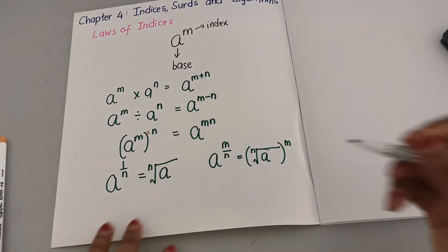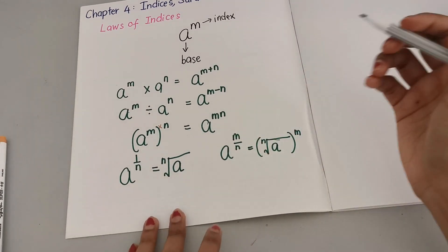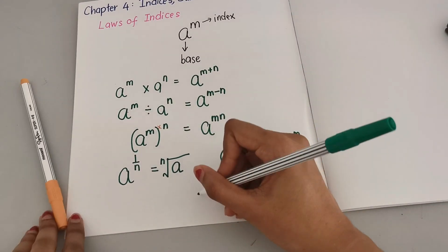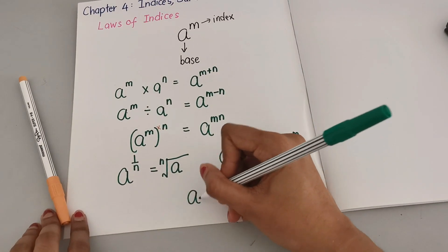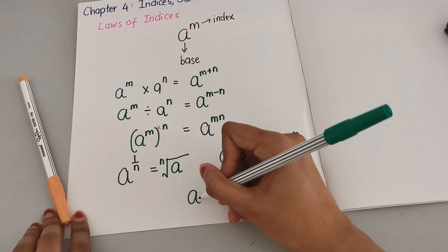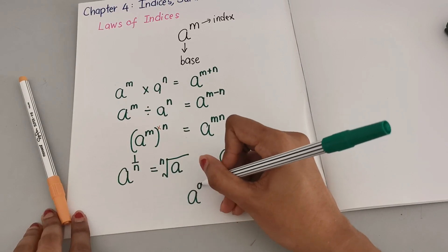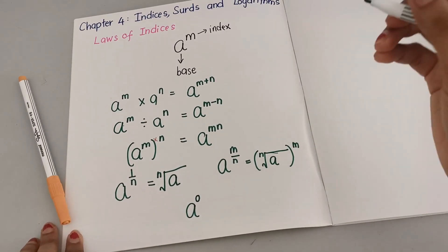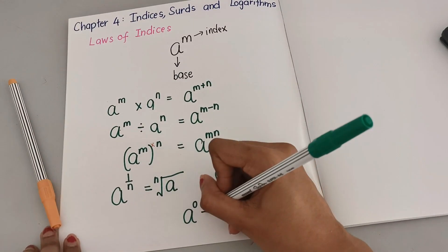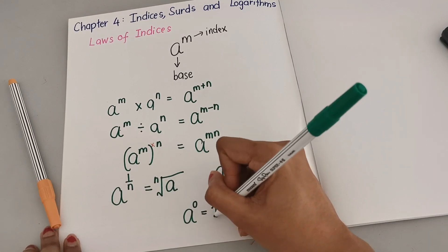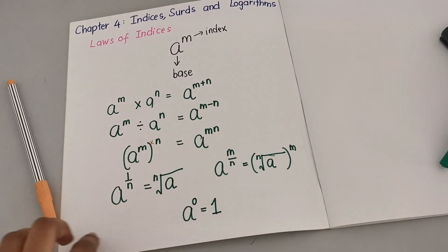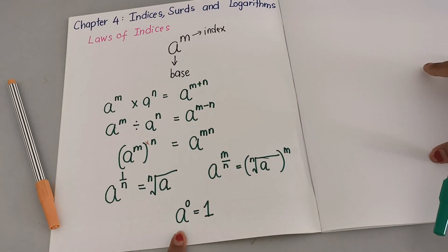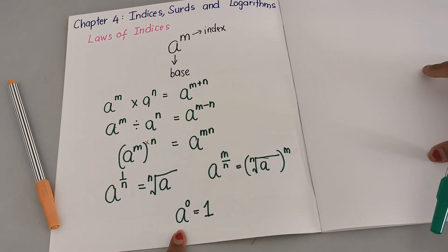Now there's one thing that you need to know: if the base is raised to the power of zero, automatically the value will always be equal to one.